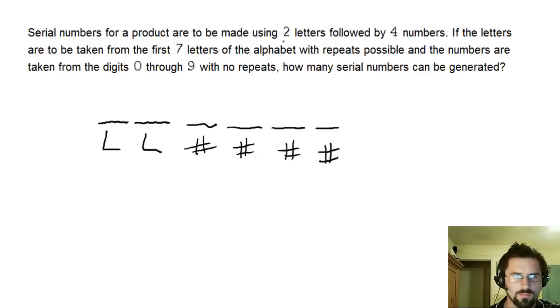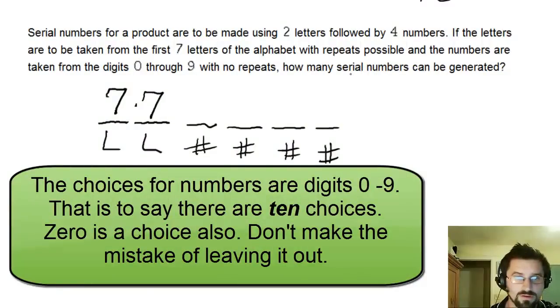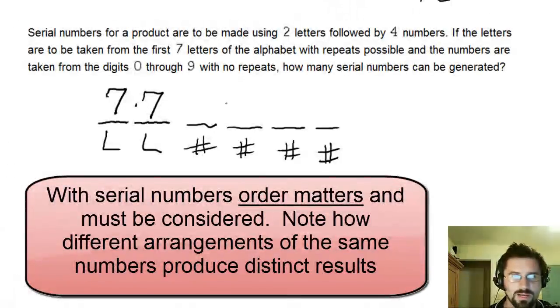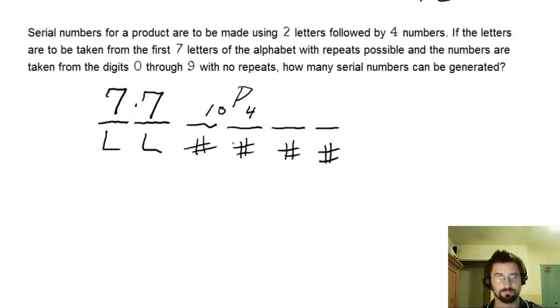We want a serial number made with two letters. So, I put two dashes there, or fill in the blanks for letters, and followed by four numbers. So, this is the order it goes in. The letters are to be taken from the first seven letters of the alphabet, with repeats possible. So, I have seven choices for the first letter. And, because I'm putting the letters back in, I have seven choices for the second letter as well. Now, the numbers are to be taken from the digits zero through nine. So, that's ten different numbers with no repeats. So, we're choosing four out of ten, but the order matters. So, it's not a combination, it's a permutation. And, out of ten objects, we're permutating four. And, we're not putting any of those numbers back. So, it's a permutation.